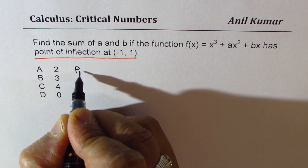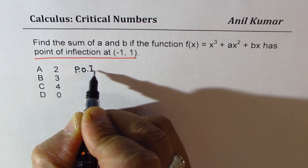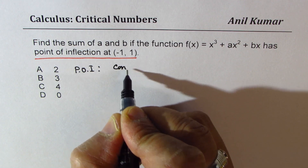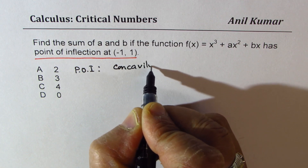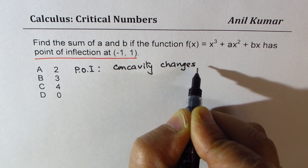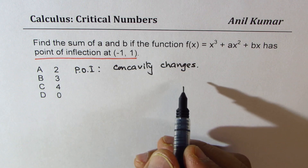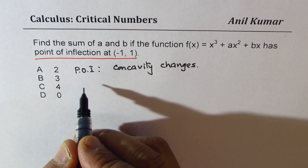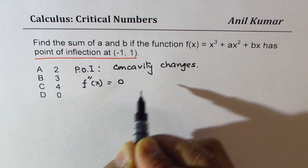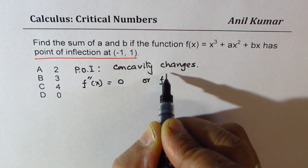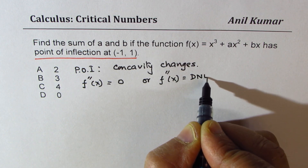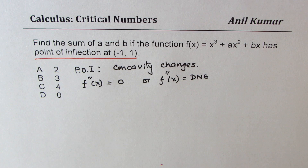A point of inflection is the point where concavity changes. You can always find this point by finding the second derivative. At this point, the second derivative is either 0 or does not exist. These are the two conditions.